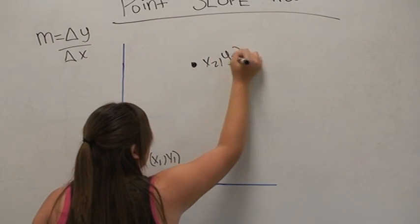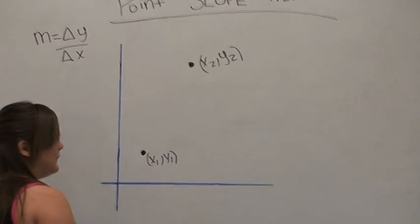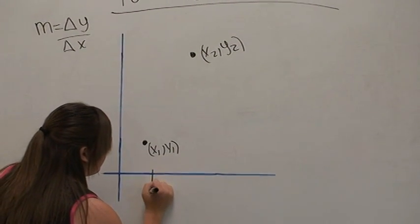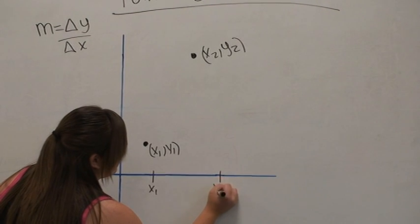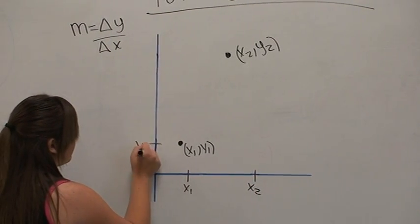We then want to label each axis their corresponding values: x1, x2 on the x-axis, and y1, y2 on the y-axis.